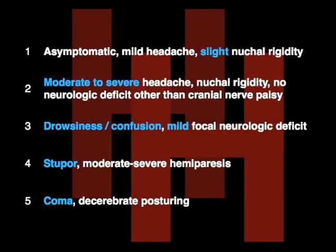The Hunt and Hess scale, originally introduced in 1968, was intended as an index of surgical risk. It's more subjective, as it uses terms such as mild headache, slight nuchal rigidity, drowsy or confused, stupor, deep coma, which are hard to quantify and patients can straddle grades.